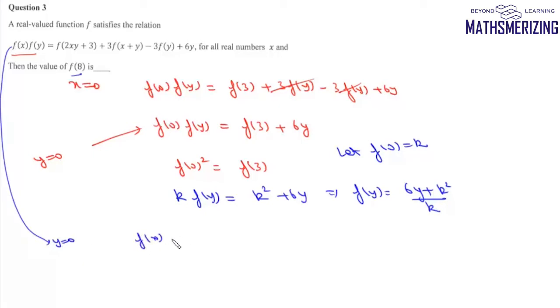We have f(0) = k and f(3) = k², so we can write f(x)(k - 3) = k² - 3k. From this, either k = 3 or f(x) = k.